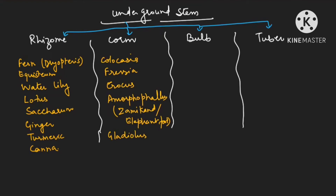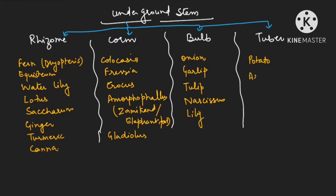In the bulb, examples are: onion, garlic, tulip, Narcissus, and lily. In tuber, examples are: potato and artichoke. Potato stores starch, which is a polysaccharide of glucose, and artichoke stores inulin — don't get confused with insulin. Inulin is your polymer of fructose.